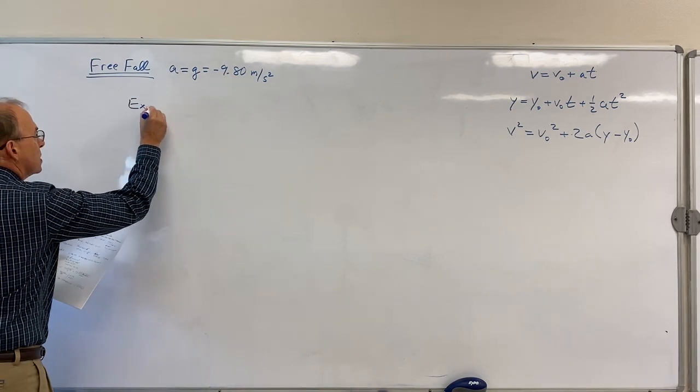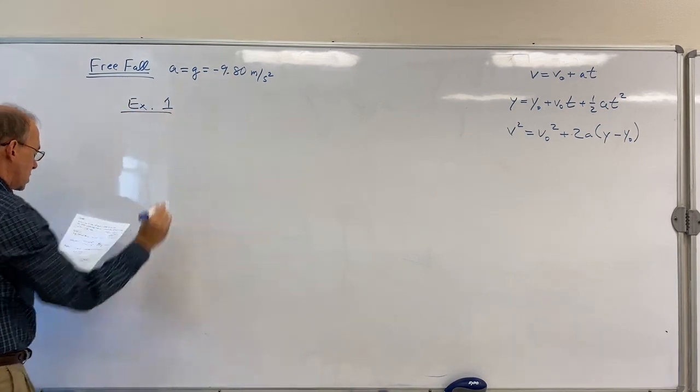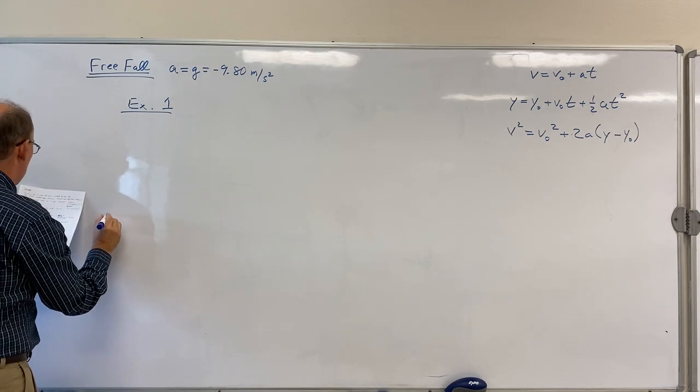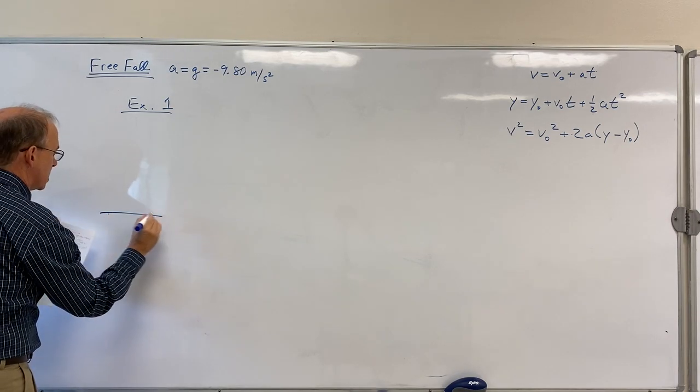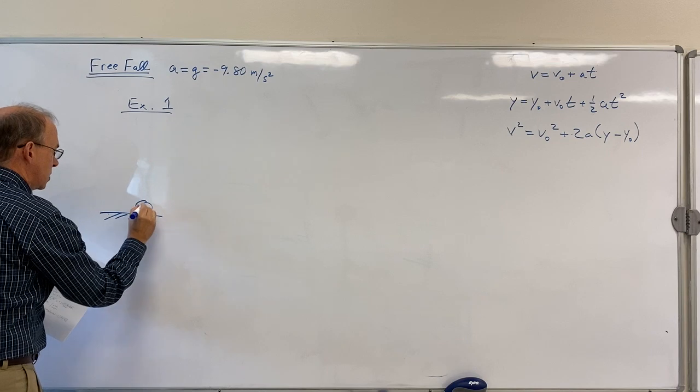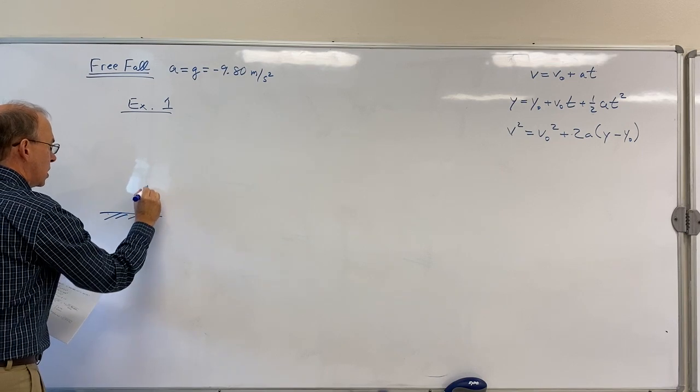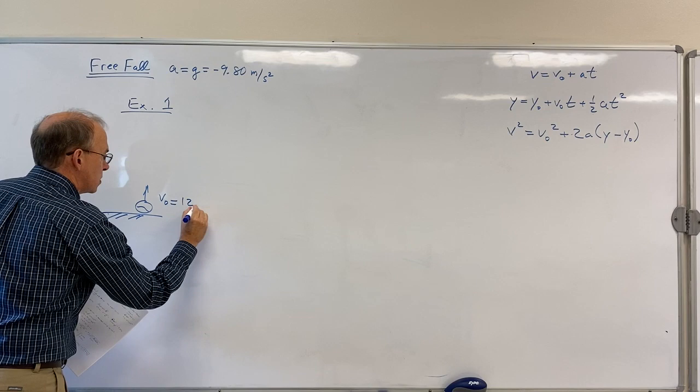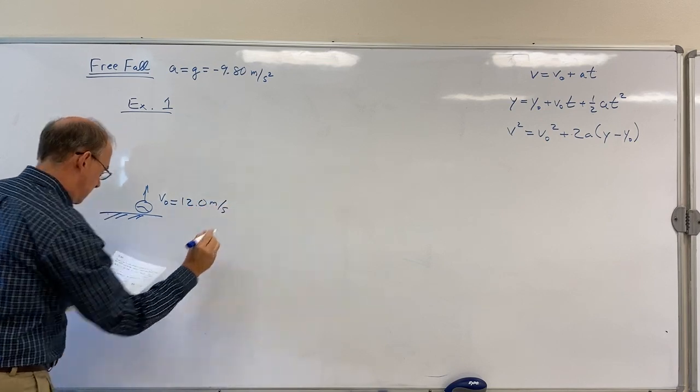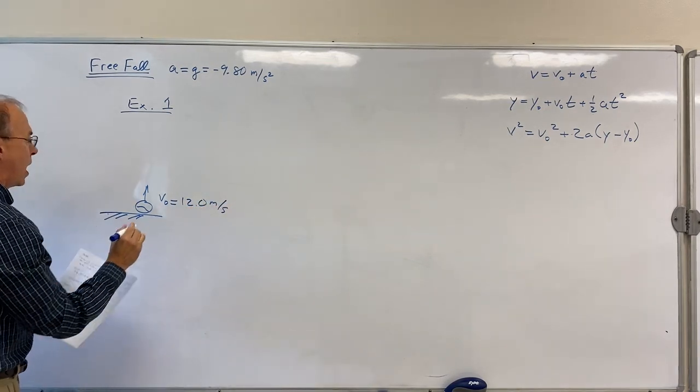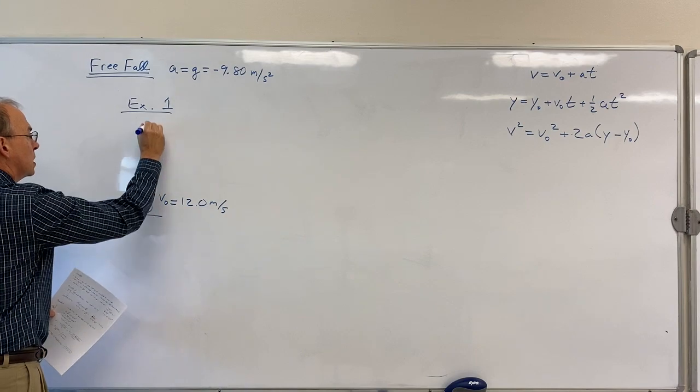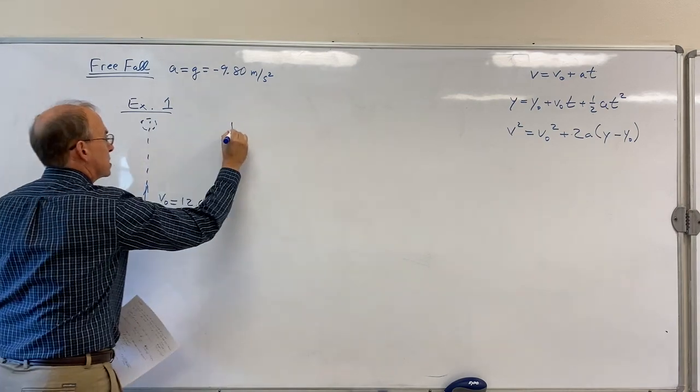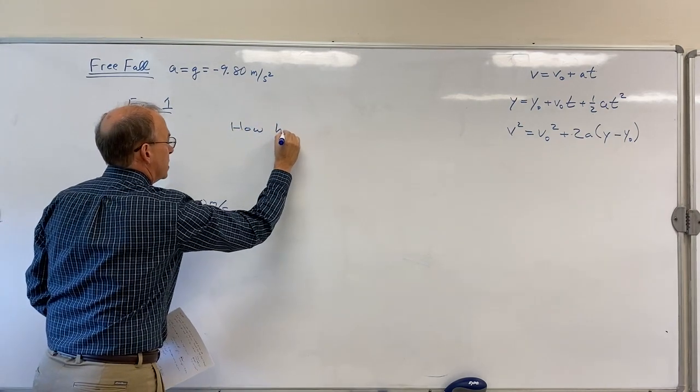Example 1. Suppose I throw a ball up at 12 meters per second. So here's the ground, here's a ball, and I just throw it up with some initial velocity, 12 meters per second, and I just want to know how high does it go?